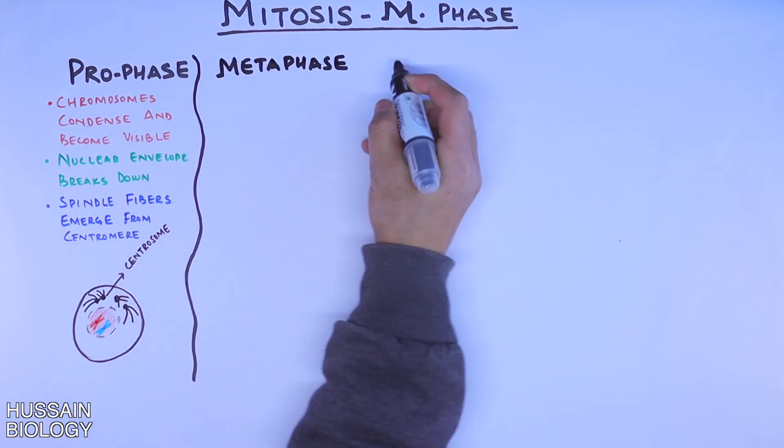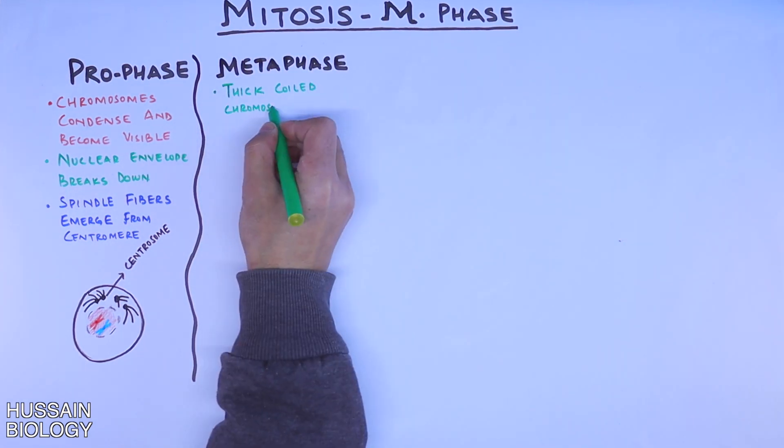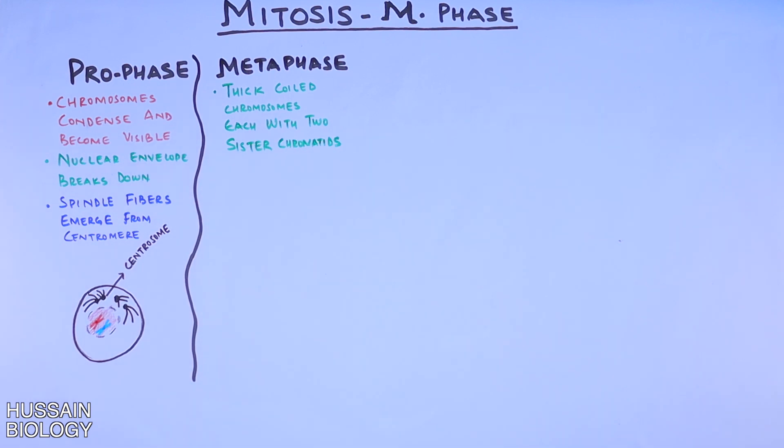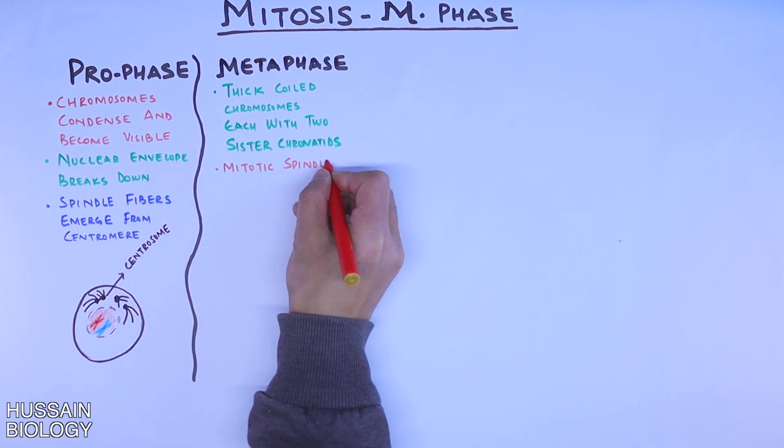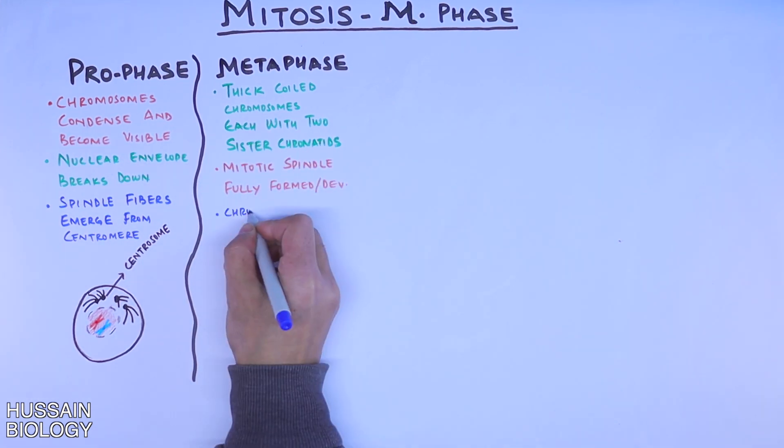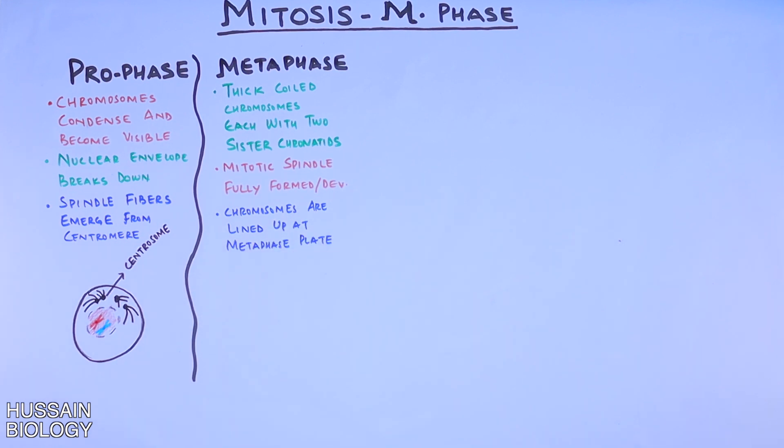Next is metaphase, where we have thick coiled chromosomes, each with two sister chromatids. The mitotic spindle has completely developed, and finally, the chromosomes line up at the metaphase plate. Here we see in this diagram how chromosomes are aligned at the center of the cell, what we call the metaphase plate.